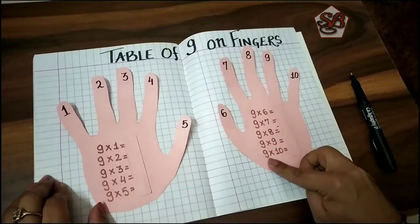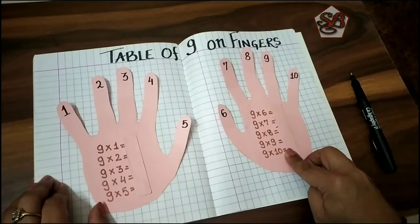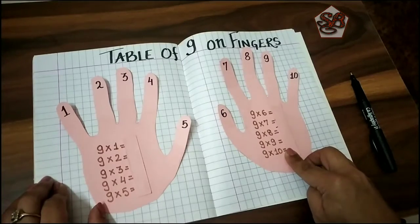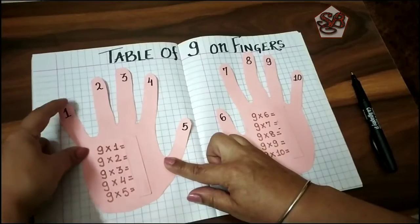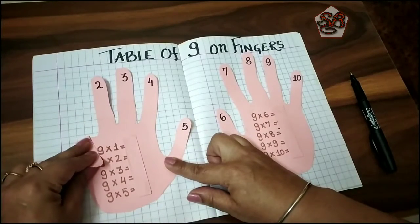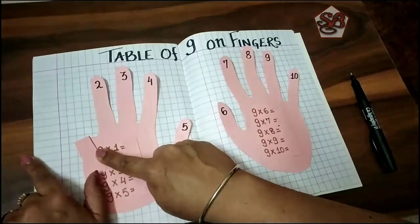Let's now understand how we can do this on our fingers. Nine ones are - so we fold our first finger, that is number one finger. There is no finger left on the left hand side.